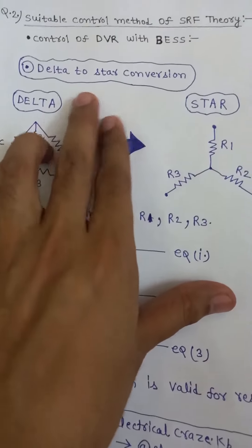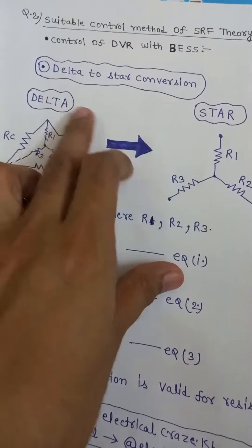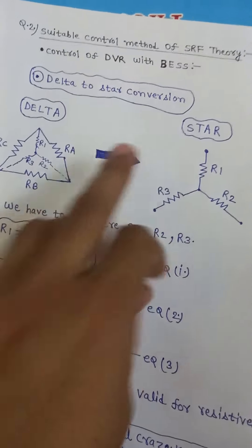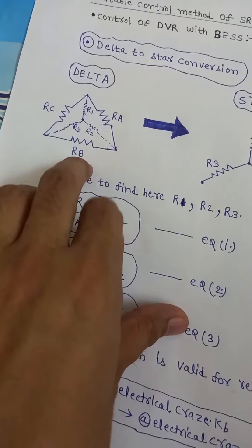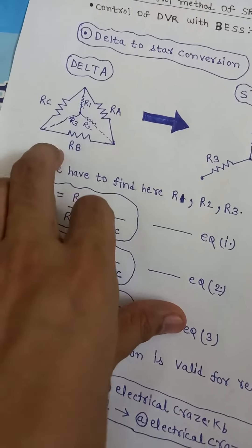Hello friends, here we quickly discuss a simple trick to convert delta to star conversion formula. Suppose Ra, Rb and Rc are the three resistances of the delta connection.